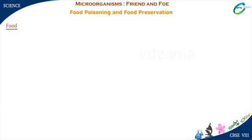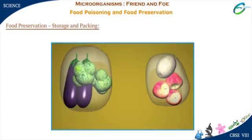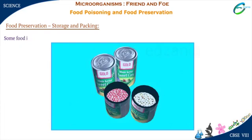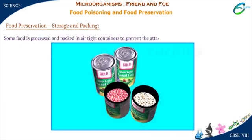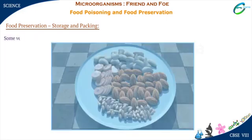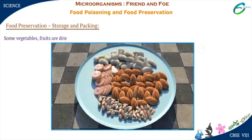Food preservation — storage and packing: Foods such as vegetables and fruits are sealed in airtight packets. Some food is processed and packed in airtight containers to prevent the attack of microorganisms. Some vegetables and fruits are dried and then packed in sealed packets.